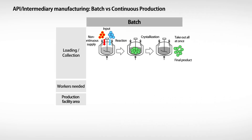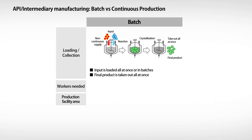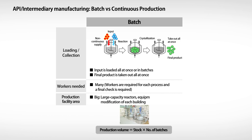Until now, when performing crystallization, a batch production method has been used in which the processing solution is poured into a tank and stirred. With this method, the products are removed all at once after the operation is completed, but the large scale of the equipment requires many workers, and the large tanks occupy a lot of space.